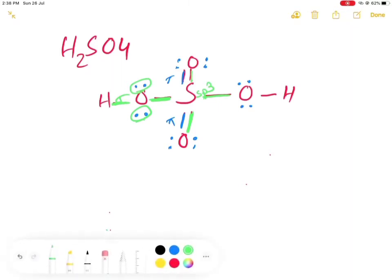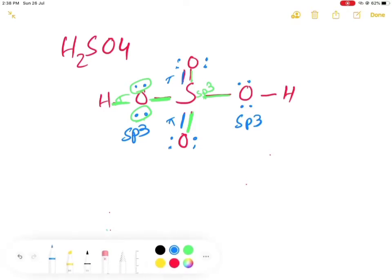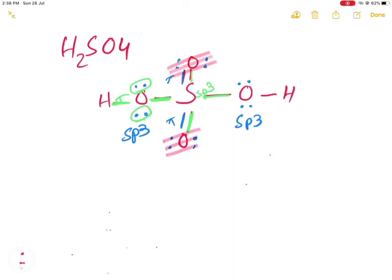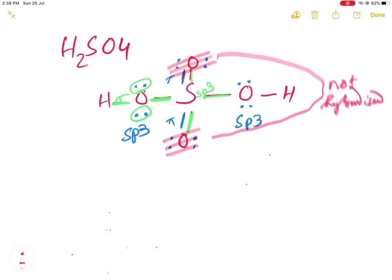This oxygen is sp3 hybridized and this one is sp3 hybridized. Now we have to think about these other two oxygen atoms — whether they are hybridized or not. These are terminal oxygen atoms, and as they are terminal oxygen atoms, these two oxygen atoms are not hybridized.